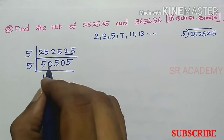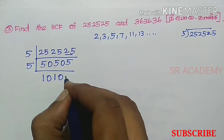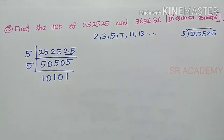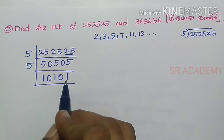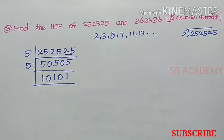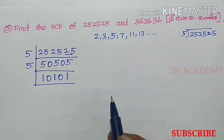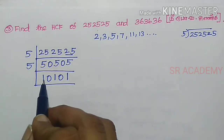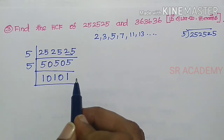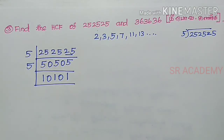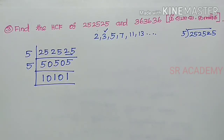We get 10101. Checking: this is not an even number — 1 is odd. The digit sum: 1 plus 0 plus 1 plus 0 plus 1 equals 3. The sum of the digits is 3, so it is divisible by 3.